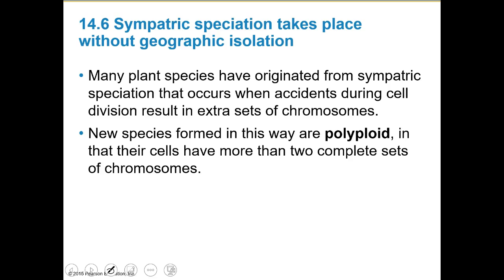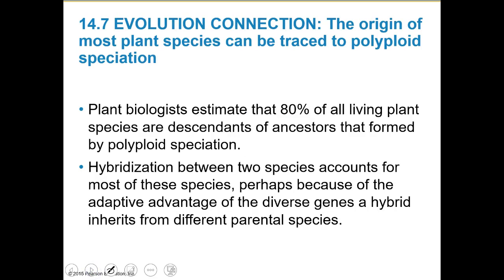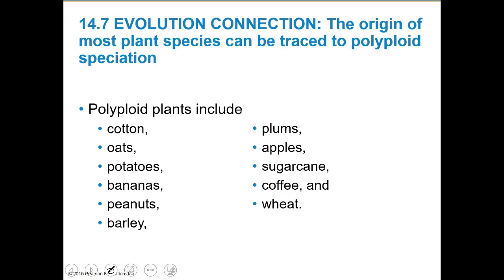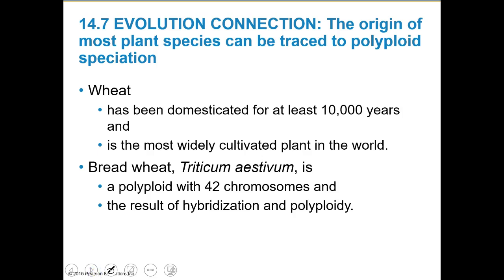Many plant species originated from sympatric speciation when accidents during cell division give extra sets of chromosomes. Plants are really great at handling this — animals just can't. New species formed this way are polyploid, meaning their cells have more than two complete sets of chromosomes. Plant biologists estimate that 80% of all living plant species are descendants from ancestors that formed from polyploidy. Some polyploids we know include cotton, oats, potatoes, bananas, peanuts, barley, wheat, coffee, sugarcane, apples, and plums. Wheat has been domesticated for a long time and is a polyploid with 42 chromosomes.